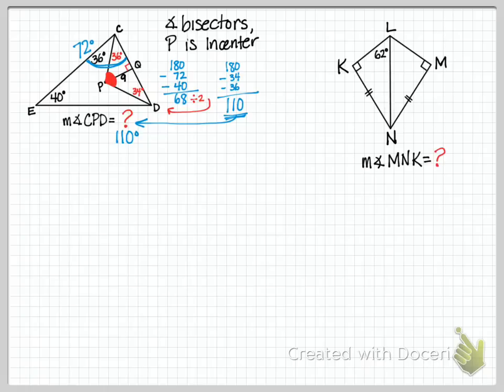And the second example, the quadrilateral KLMN. Well, there's 360 degrees in a quadrilateral, and we notice that N is the point that is equidistant to the sides of the angle KLM. So therefore, that LN is an angle bisector, that's why I know that both of those angles are 62 degrees. And now, we just subtract all of those from 360, and we get that the measure of the angle MNK is 56.